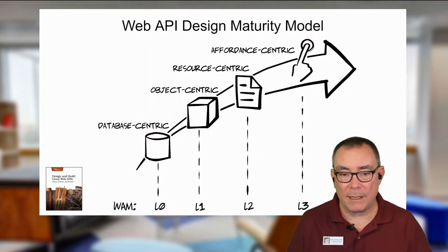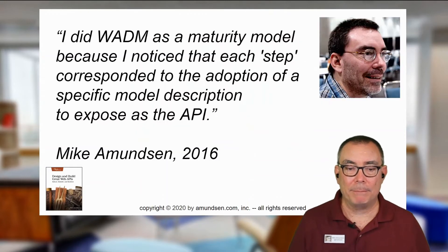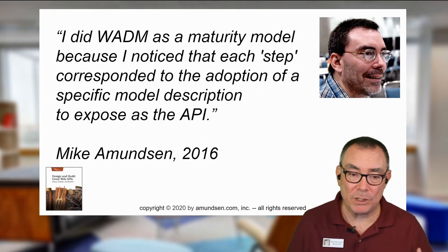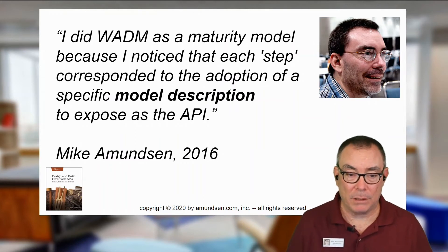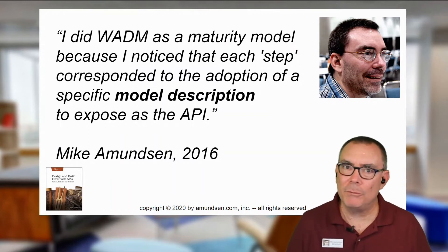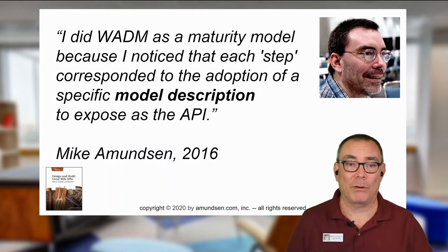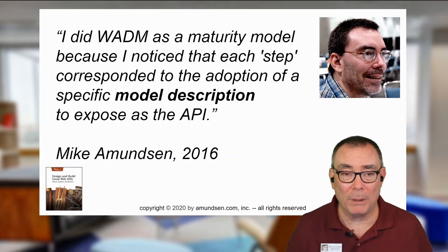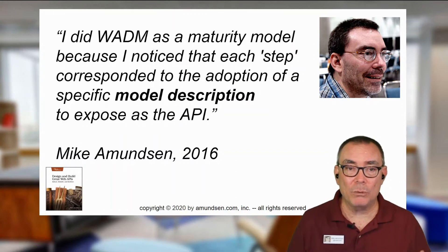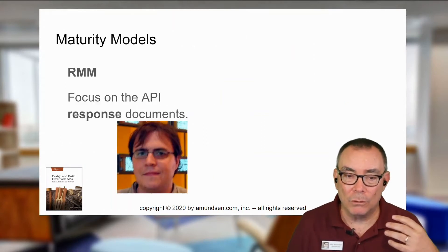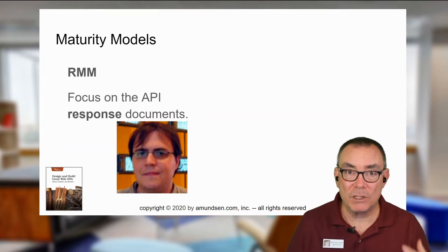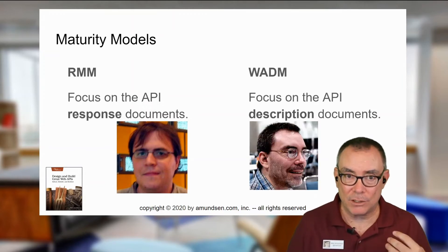I did this maturity model because I noticed that each step corresponded to the adoption of a specific model description language or model description approach to expose that API. Because really what we have to do before we can use the API is we have to build it. And before we build it, we've got to design it. And before we design it, we have to model it. So there are these steps along the way. I noticed that people were using sort of different models, and they had a kind of a maturity to them. Leonard's model focuses on response documents; my model focuses on description documents. This model has been around for a while — I first started talking about this around 2016, 2017.